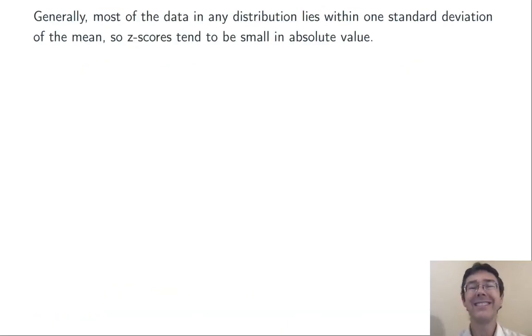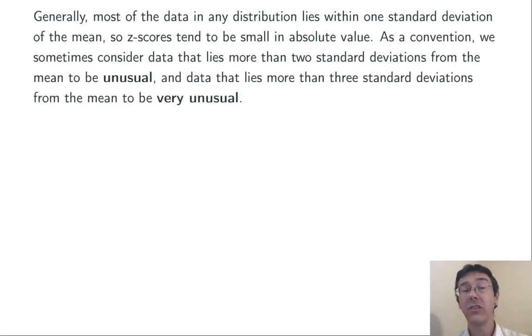Generally, most of the data in any distribution lies within one standard deviation of the mean. Z-scores tend to be small in absolute value. As a convention, we sometimes consider data that lies more than two standard deviations away from the mean to be unusual, and data that lies more than three standard deviations from the mean to be very unusual.